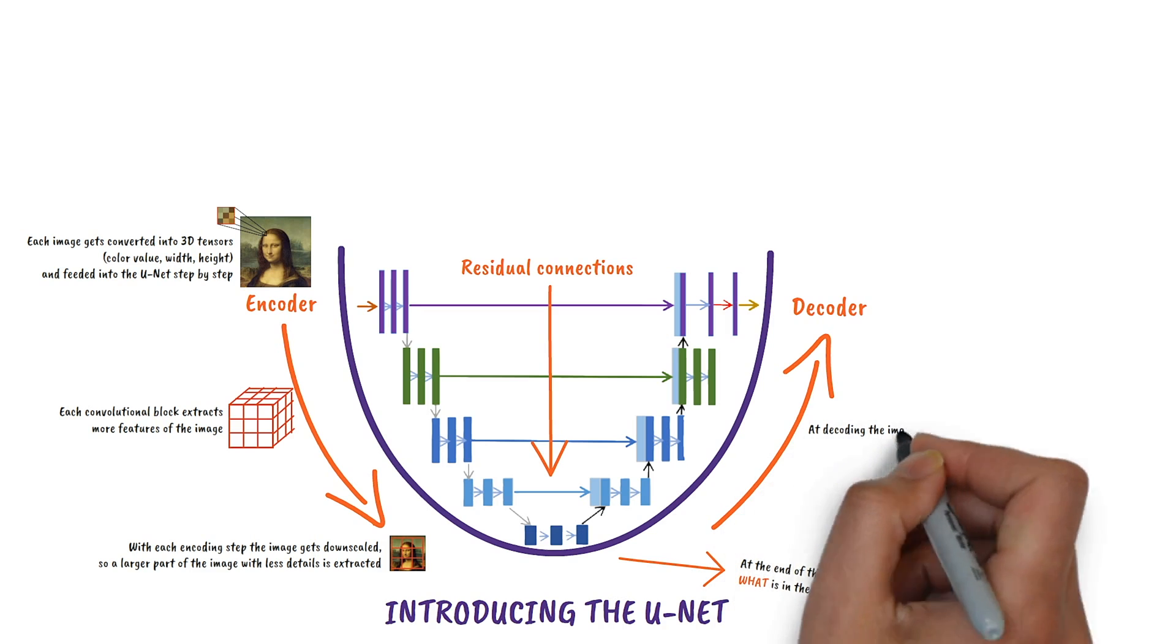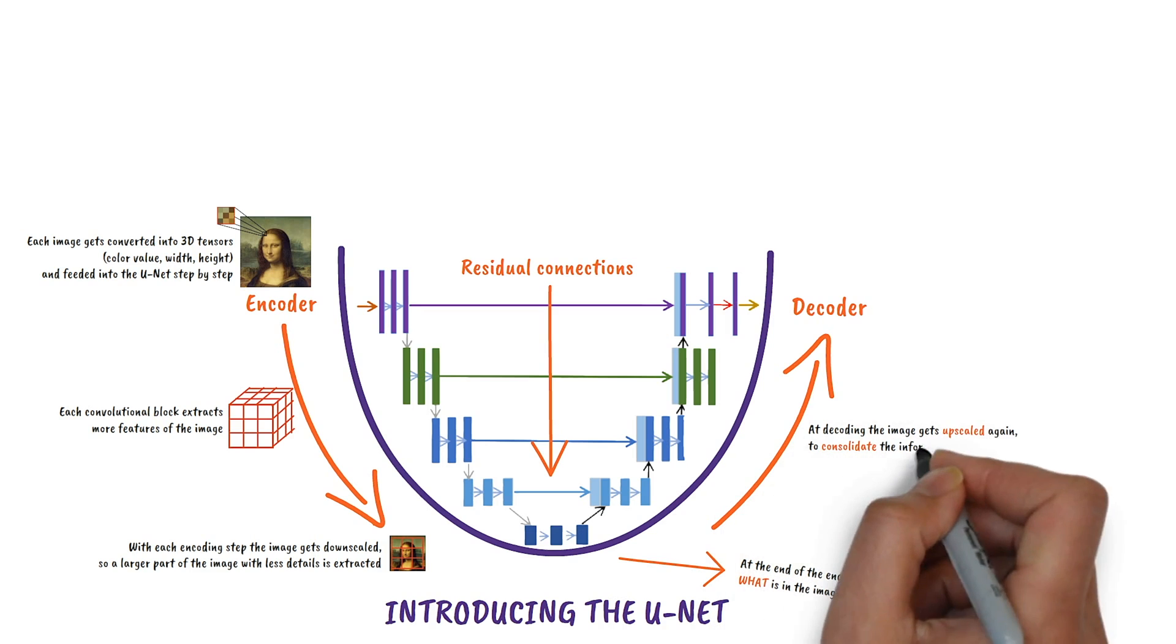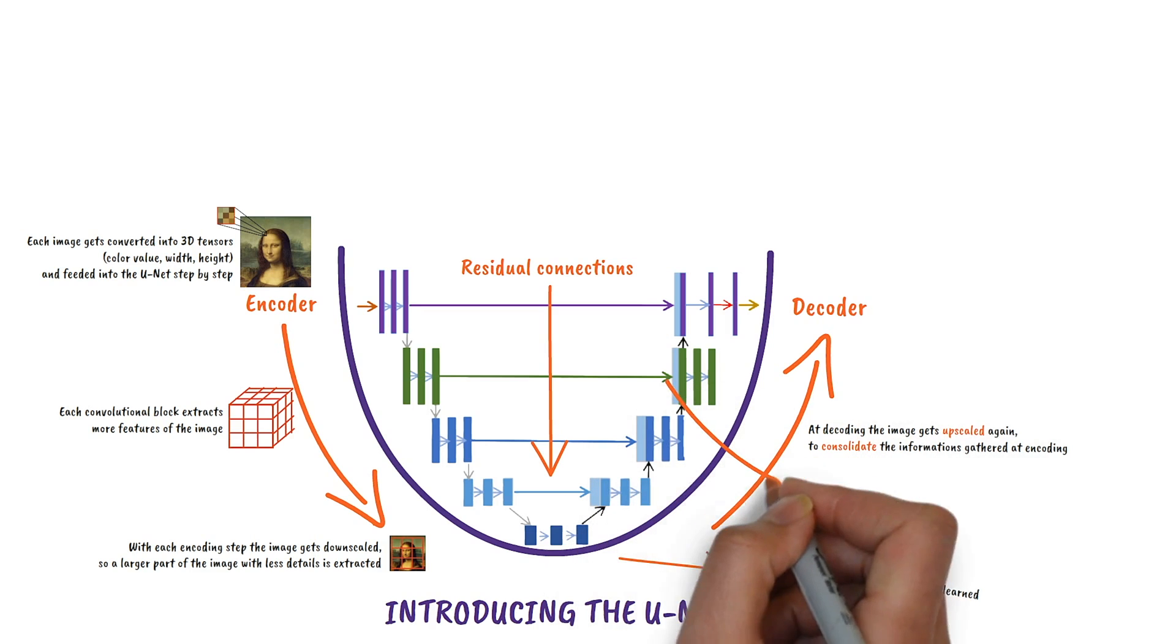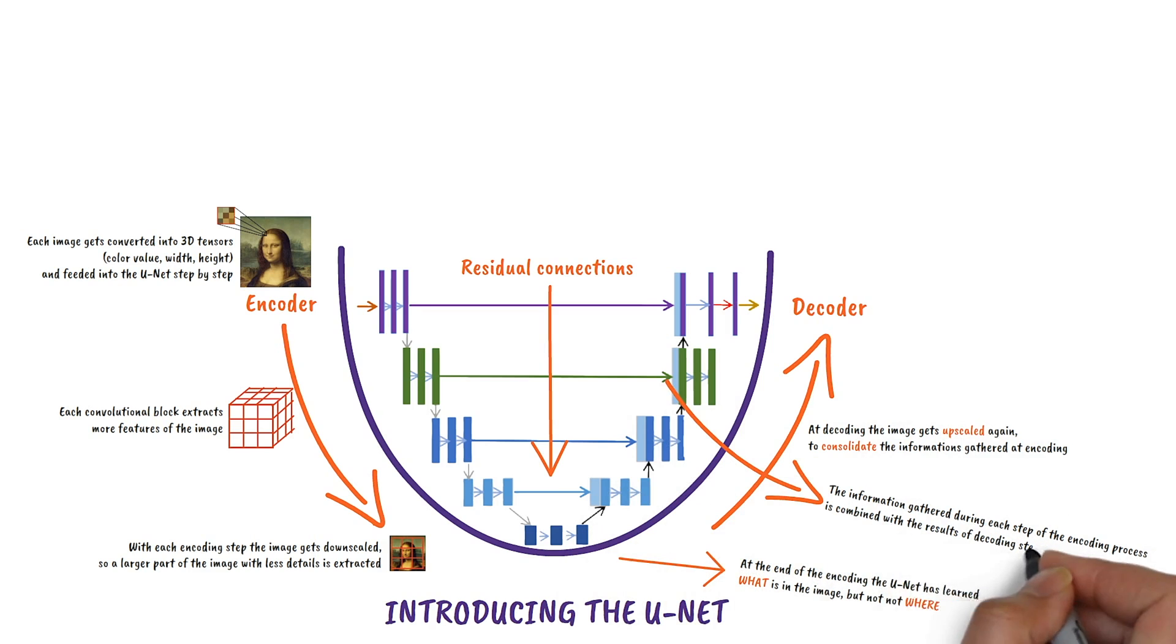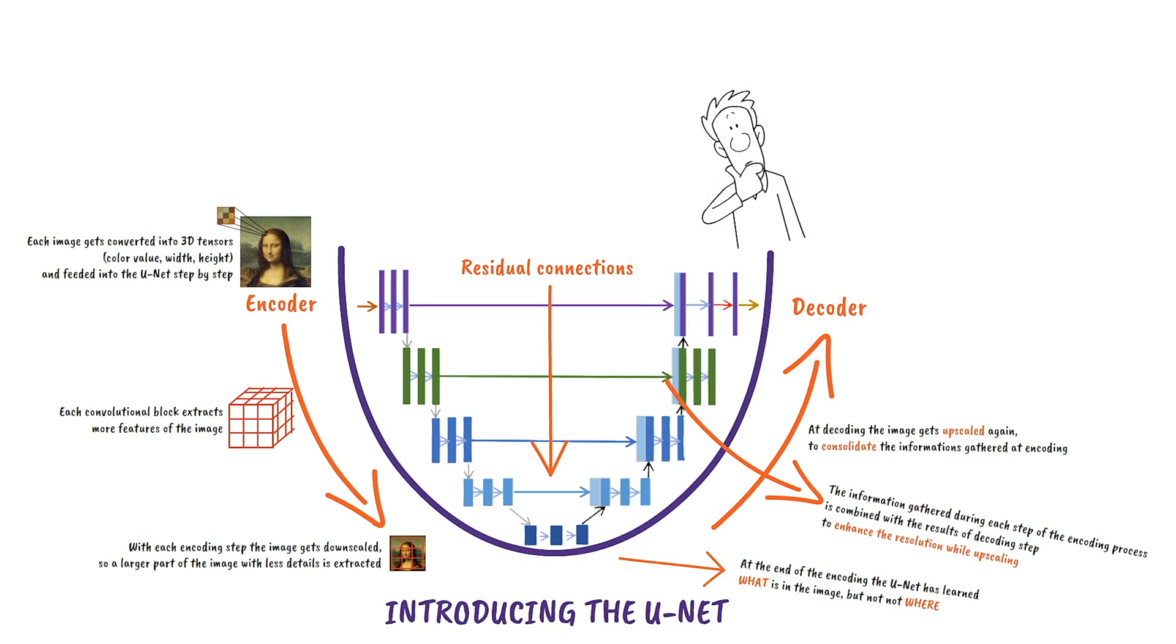At decoding, the image gets upscaled again in order to consolidate the information. The data gathered by the encoder is added to it at each decoding layer. That's been a tough one.